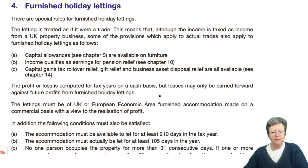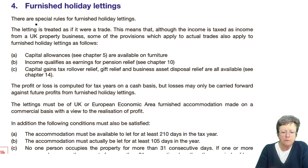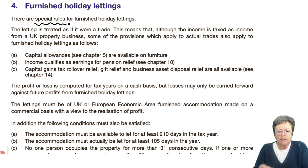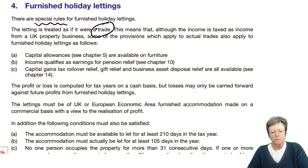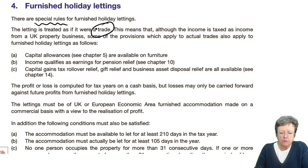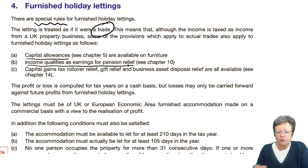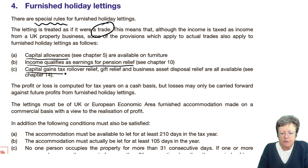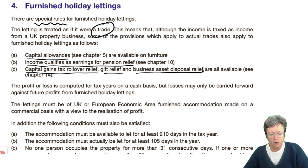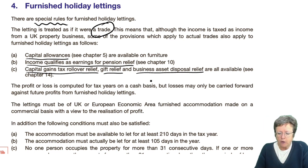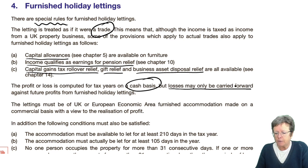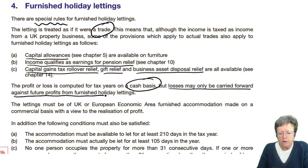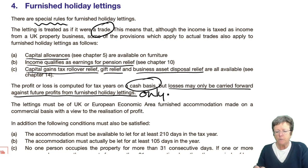Moving on to furnished holiday lettings. These are special rules because it's treated as a trade. So you can actually have capital allowances. The income qualifies as earnings for pension relief, which we will see later. You get the capital gains tax reliefs — again, we will see those later in the course. It's always worked out on a cash basis. And the losses are carried forward against future profits from this holiday letting only — they stick together.